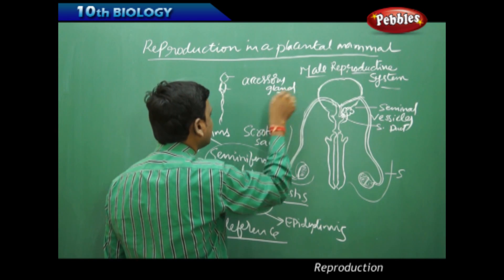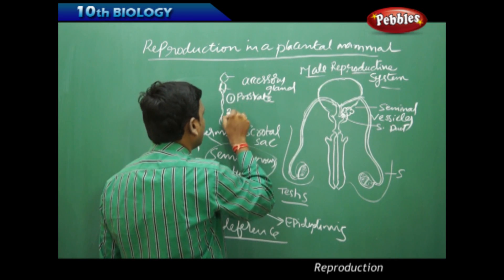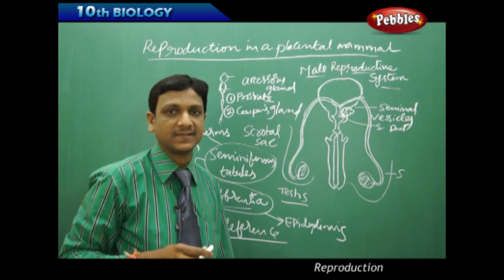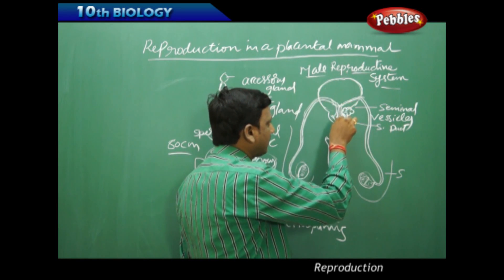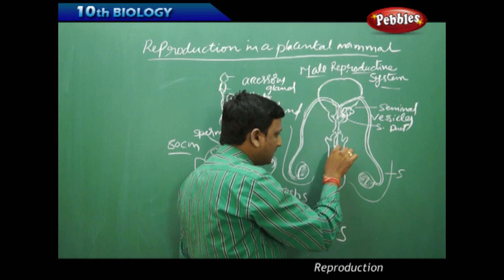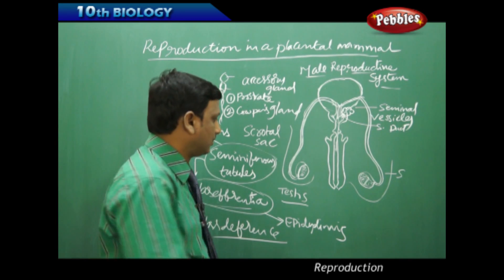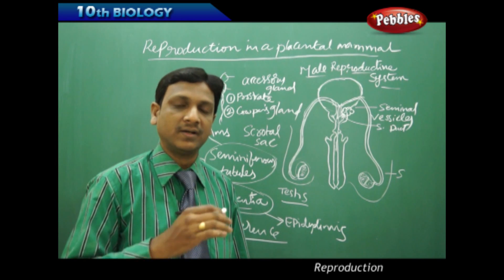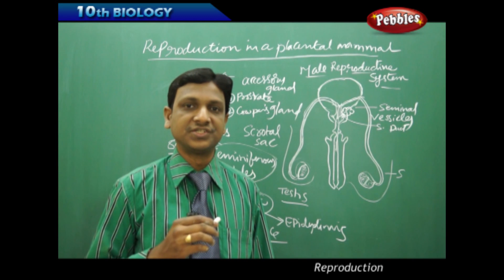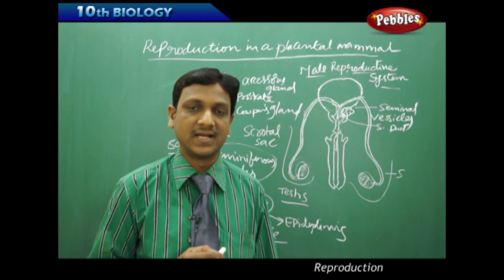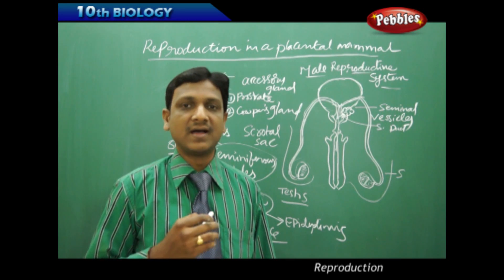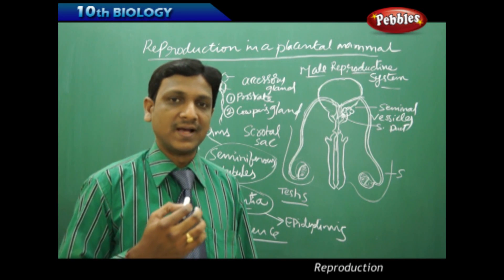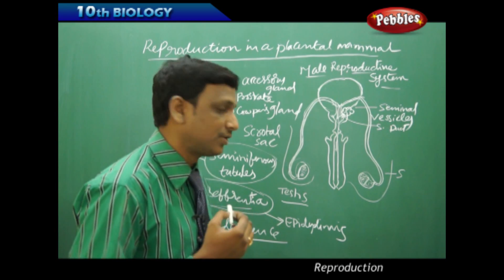The male reproductive gametes mixed with semen are passed into the urethra and expelled out of the body. The testes also act as endocrine glands, producing a hormone called testosterone. Testosterone helps in the development of secondary sexual characters such as development of beard, mustache, hair in the underarms, and change of voice — occurring at around 14 to 15 years of age during adolescence. All these physical changes in an adolescent are caused by testosterone secreted by the testes.